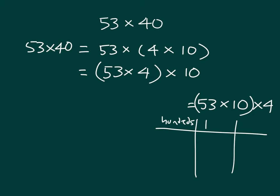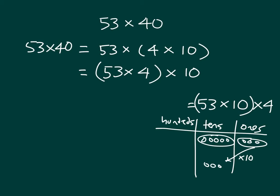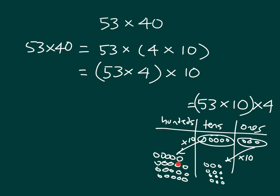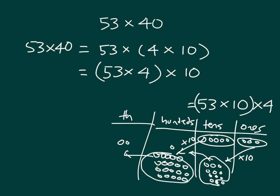For the first approach — 53 times 10 then times 4 — we model 53 first, then multiply by 10: those 3 ones become 3 tens, and those 5 tens become 5 hundreds. Then we multiply by 4. So 3 tens times 4 gives 12 tens, and 5 hundreds times 4 gives 20 hundreds. The 12 tens need a regroup, and the 20 hundreds regroup to 2 thousands. The answer is 2,120.